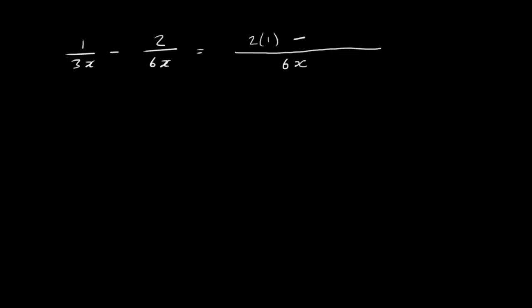We write down the minus. What did we do to 6x to turn it into 6x? We just multiplied by 1, so the numerator stays as 2. We have 2 minus 2 here, which is 0 over 6x, which gives us 0. So that was a little bit shorter than the other ones.